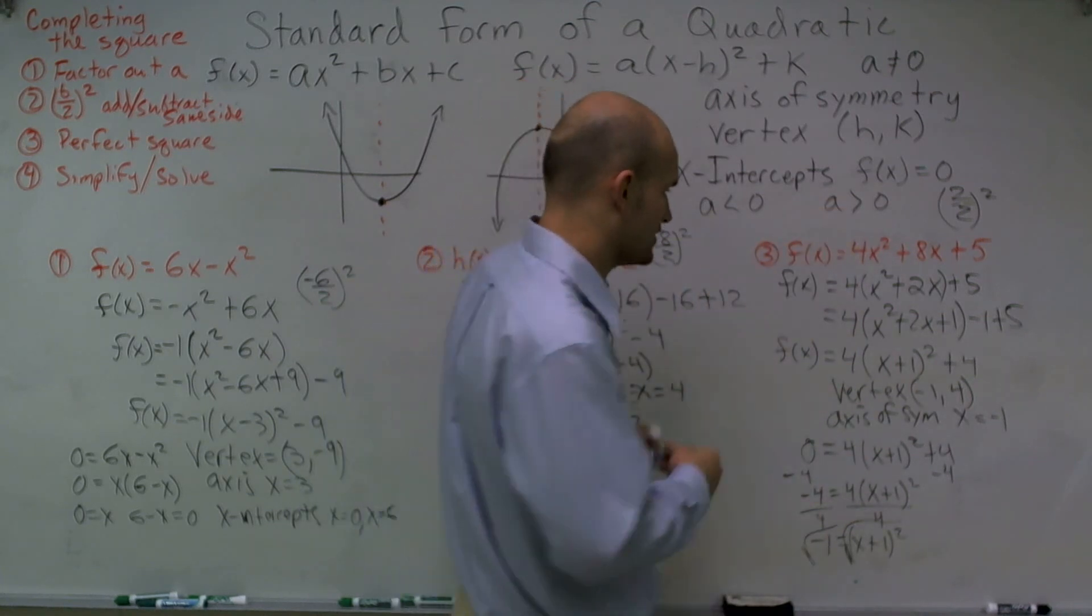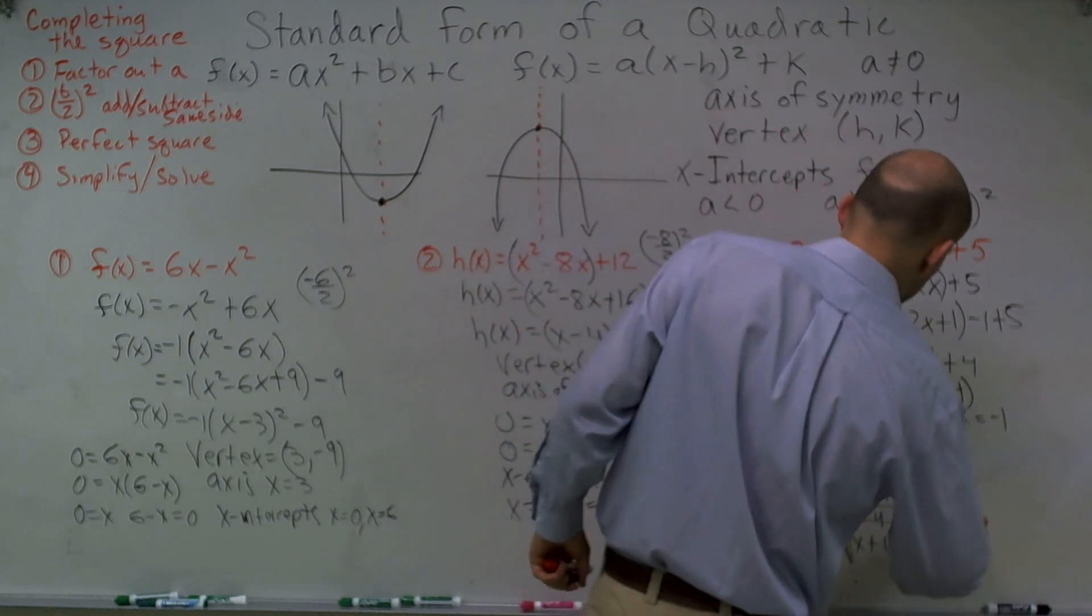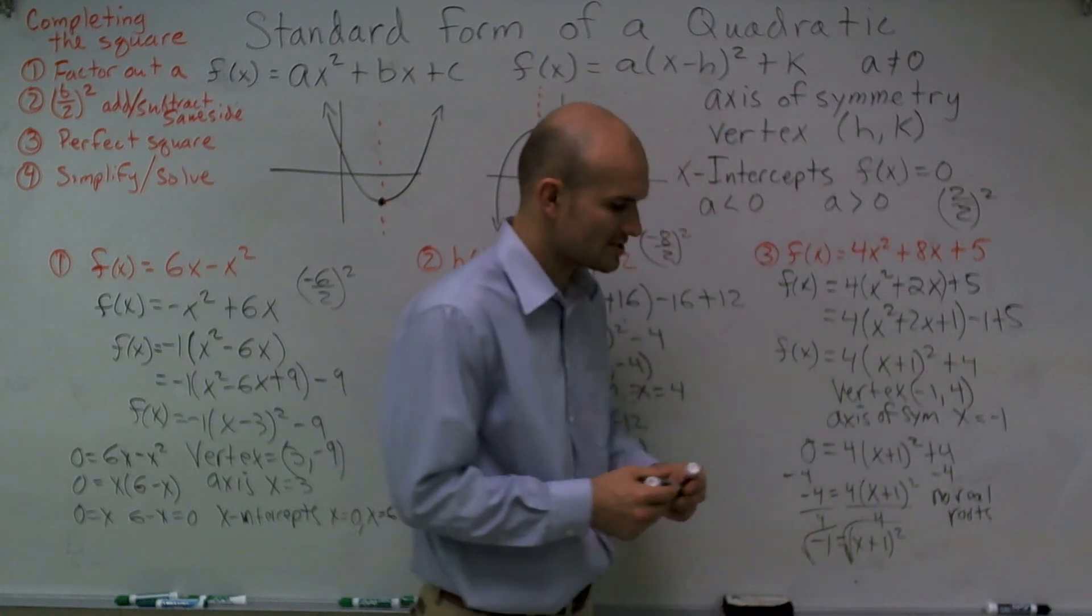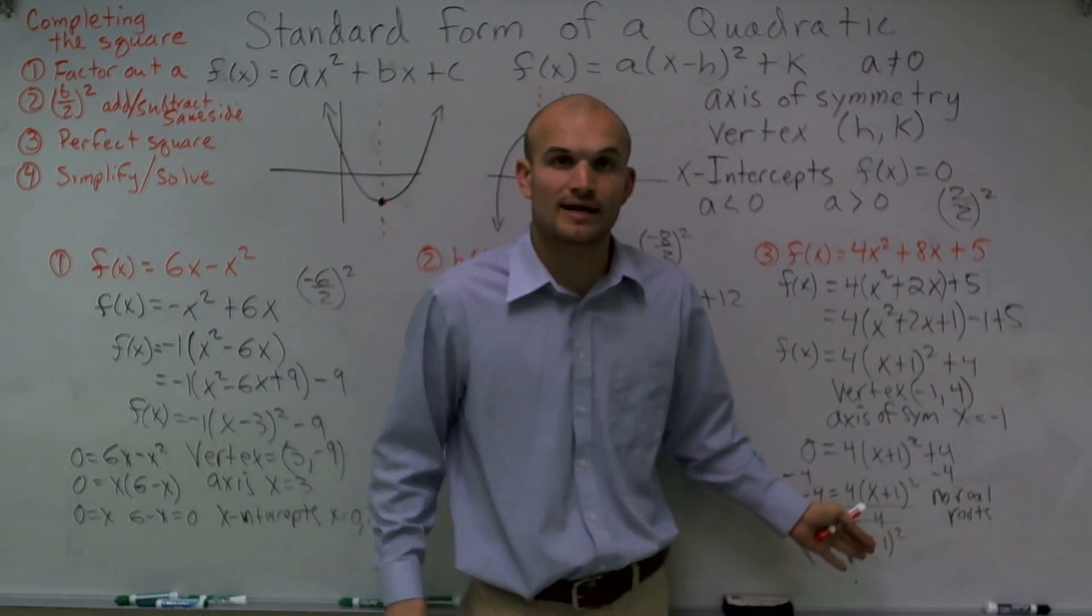So, therefore, you're going to say that no real roots or no real x-intercepts, because you cannot take the square root of a negative number.